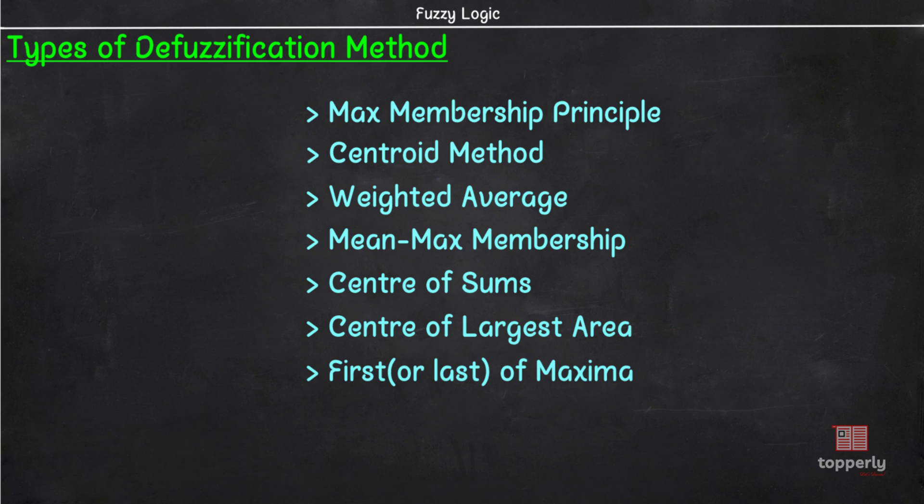So we have developed several methods for defuzzifying fuzzy output functions. They are max membership principle, centroid method, weighted average method, mean max membership method, center of sums, center of largest area, and first or last of maxima.